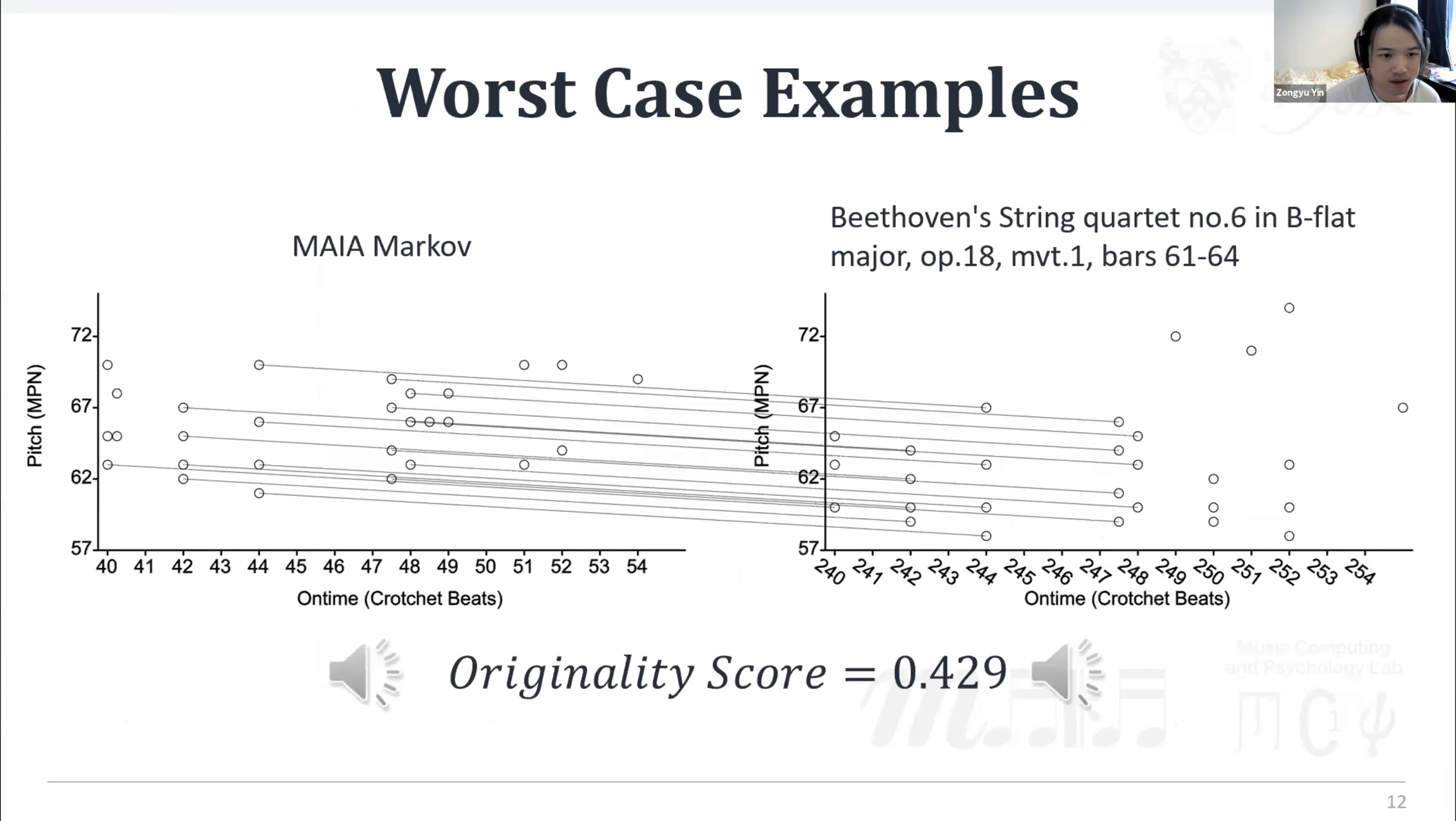The worst case of MAIA Markov generated excerpts produce 0.429 originality score compared with the right-hand side Beethoven string quartet. Let's listen to these two excerpts. Firstly, the generated one. And secondly, the original one. MAIA Markov learns the transition probabilities between states, which encode a note or chord in beat level. As a result, we can see here the copy mainly stems from referring consecutive chords.